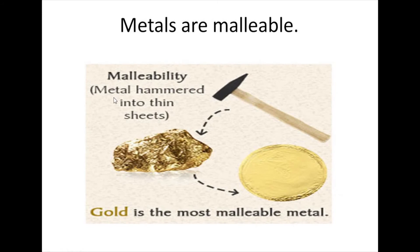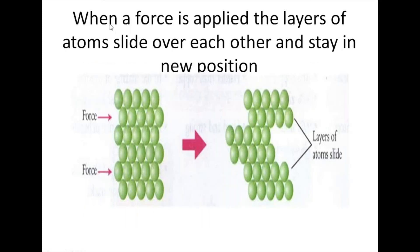Metals are malleable. Malleable means they can be hammered into thin sheets or bent easily and shaped without breaking. When a force is applied, the layers of atoms slide over each other and stay in the new position.